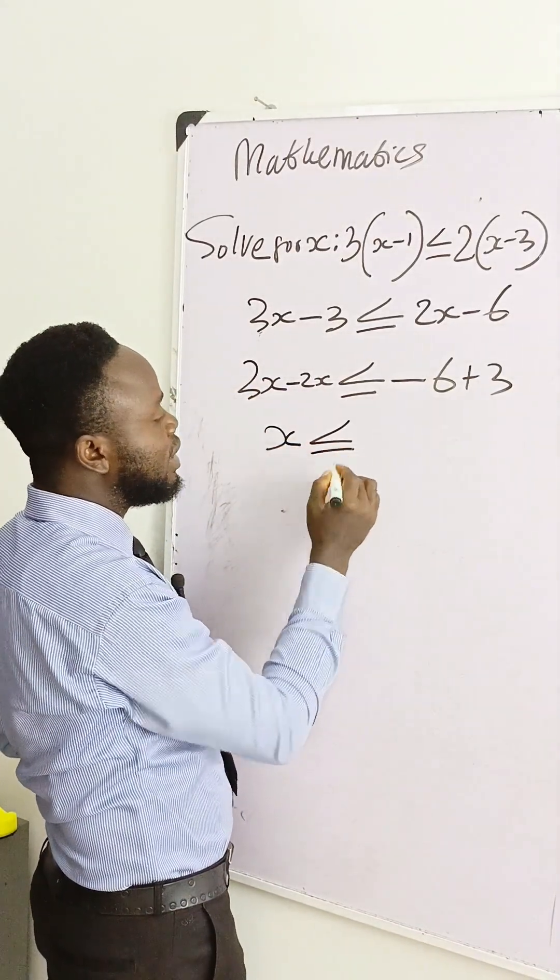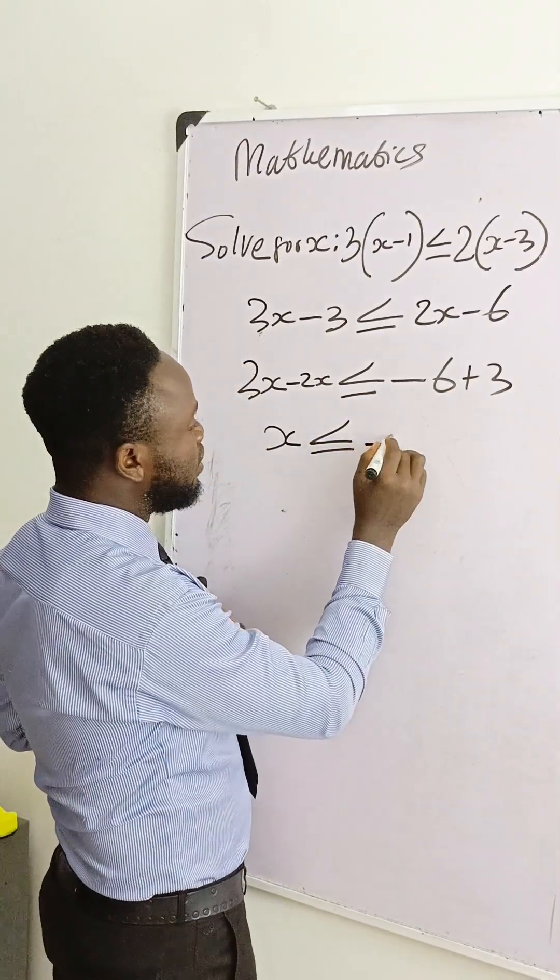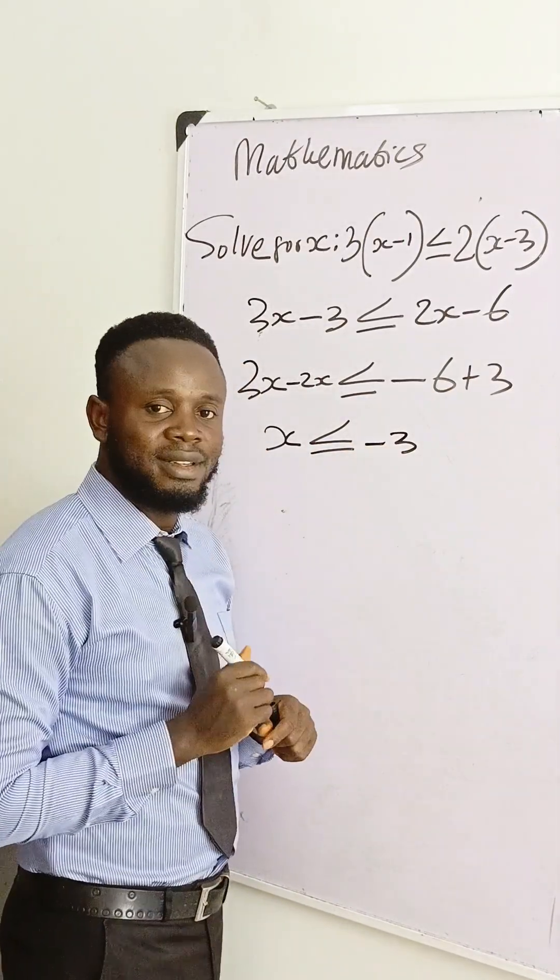Only 1x less than or equal to minus 6 plus 3 is minus 3, and that's the final answer. Thank you.